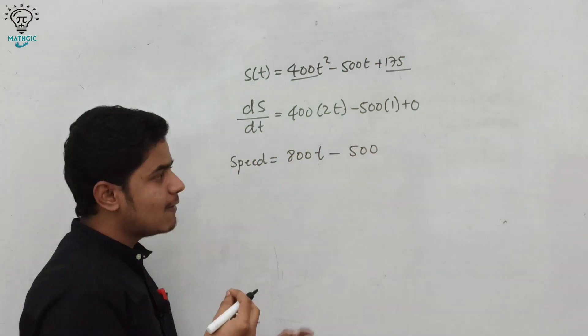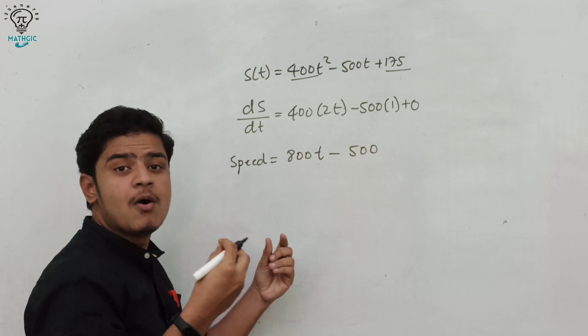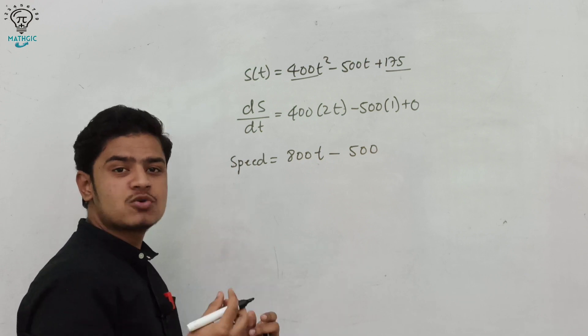We have to find the speed of the rocket when time is 10 seconds — that is called the instantaneous speed.